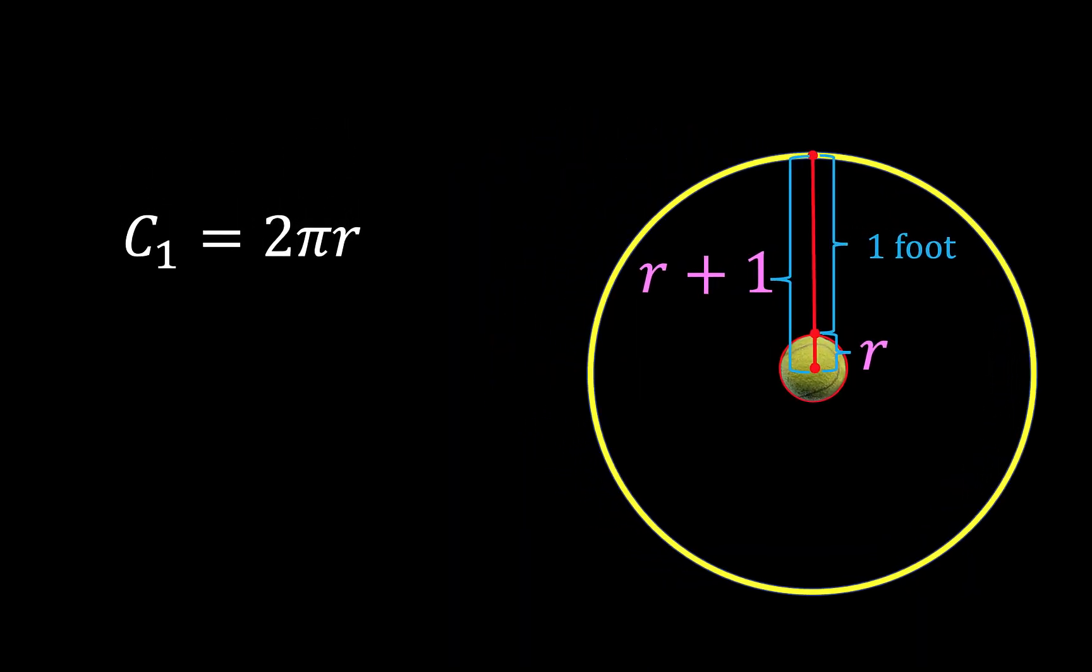And so if you are looking for the length of the extra rope between this small red circumference and this bigger yellow circumference, then we can subtract their corresponding circumferences. Here, C₂ would be equal to 2π times the radius of R plus one.